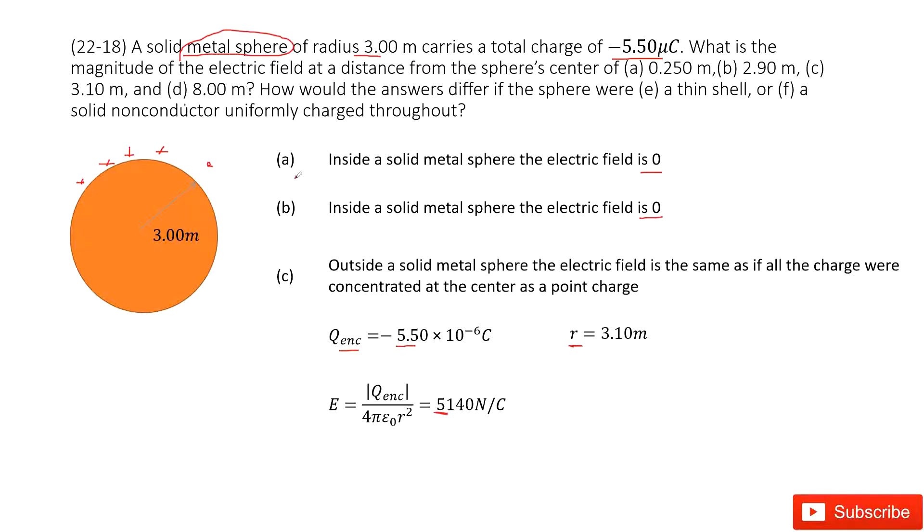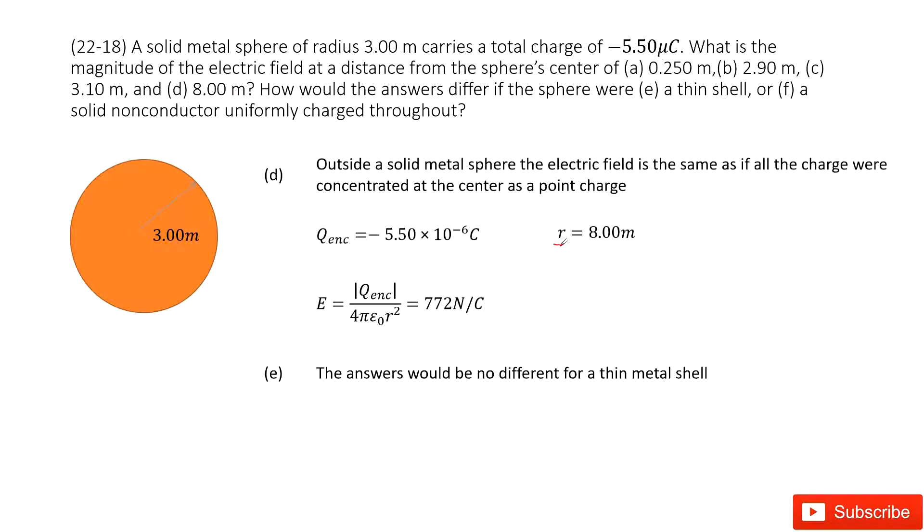Then we look at part D. D is just changing the distance r. r becomes 8 meters. Still, it is outside of this circle, and we still use Gauss's law. We can get the electric field answer for this spherical object using this function. The net charge enclosed is still given, so we get the answer.